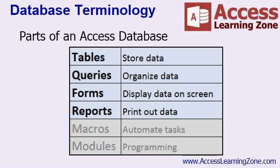Tables are used to store data, queries to organize data, forms to display data on the screen and to edit that data, reports for printing out data, and optionally for more advanced users, macros are used to automate tasks. Modules give you the full Visual Basic programming language inside of your Access database. You can build a fantastic database in Microsoft Access without ever using a macro or a module — I cover macros in my advanced classes and module programming in my developer level classes. But all you really need are tables, queries, forms, and reports.